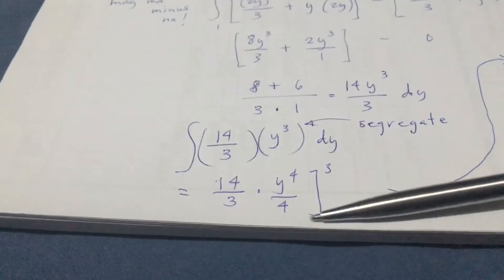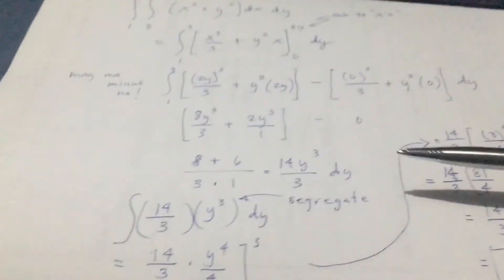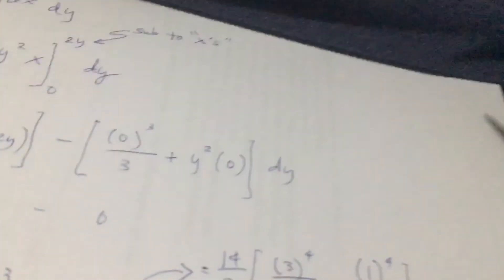Then after that you're going to substitute the three and the one, upper and lower limits again. The same instructions.